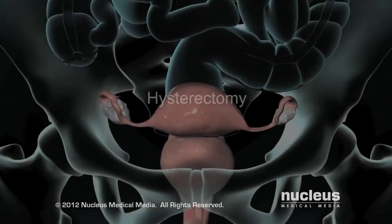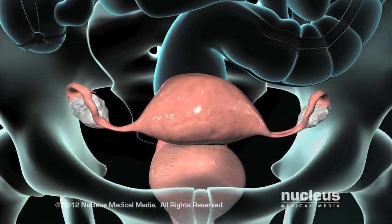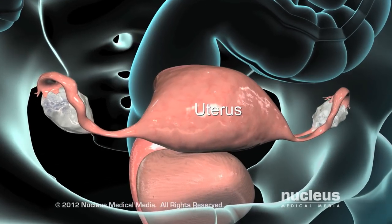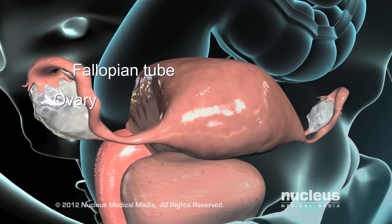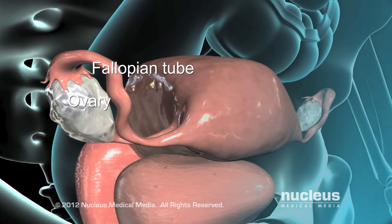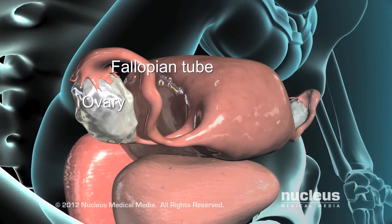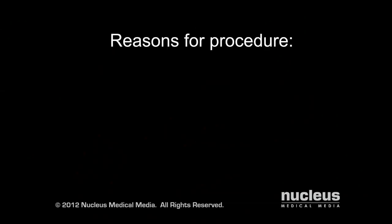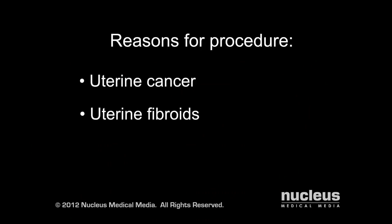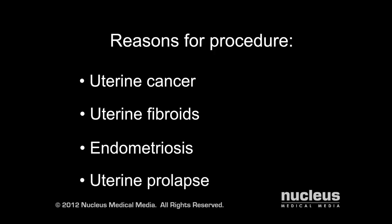A hysterectomy is the surgical removal of the uterus. When the ovaries and fallopian tubes are also removed, this is called a hysterectomy with salpingo-oophorectomy. A hysterectomy is done to treat uterine cancer, uterine fibroids, endometriosis, uterine prolapse, and other gynecological conditions.